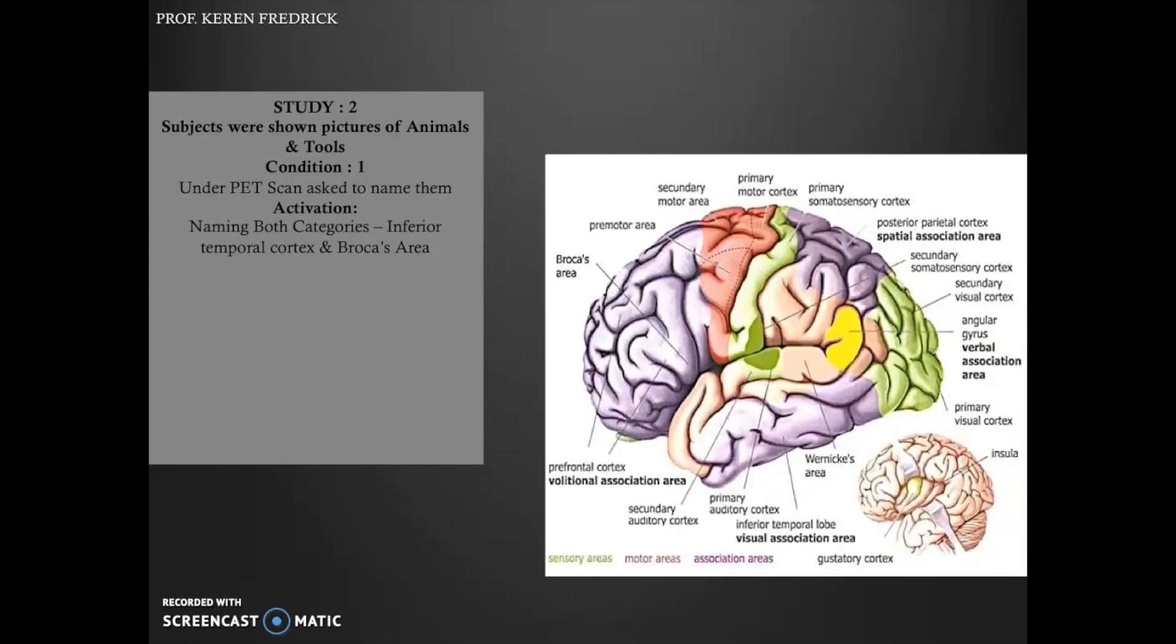The next thing we're going to look at is another study. In this study, the subjects were shown pictures of animals and tools, and there were three conditions. In condition one, under PET scan, they were asked to name all of them - that is, name all the animals as well as tools. Under the PET scan, the following regions were activated: the inferior temporal regions as well as Broca's area were activated when they were trying to recall both animals and tools.